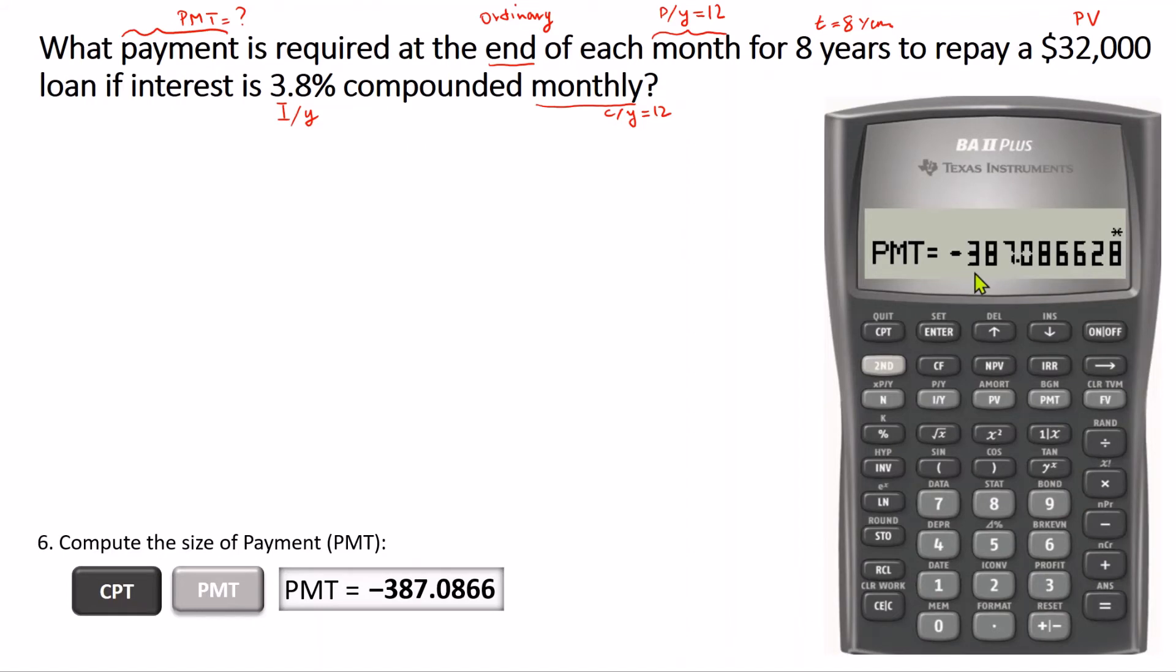If you round off this number to the nearest cent, the answer will be $387.09.